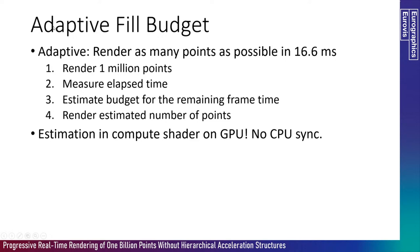With a fixed fill budget, if you just render 1 million points you're wasting time on a high-end GPU; if you render 30 million points it won't work on a low-end GPU. So we need an adaptive fill budget that automatically adjusts the number of points rendered. We do this directly on the GPU: in each frame we first render 1 million points, then in the compute shader we measure how long that took and estimate how many more points we can render in the remaining frame time. We then render that remaining number with an indirect draw call. Since all of that is done on the GPU with no syncing to the CPU, this runs quite fast.